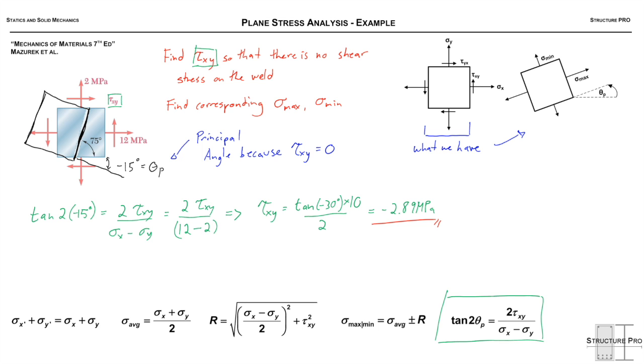For that we had to look at our notation and how we defined it. Next we can find the corresponding principal stresses. The σ_avg is (12 + 2)/2, or 7.